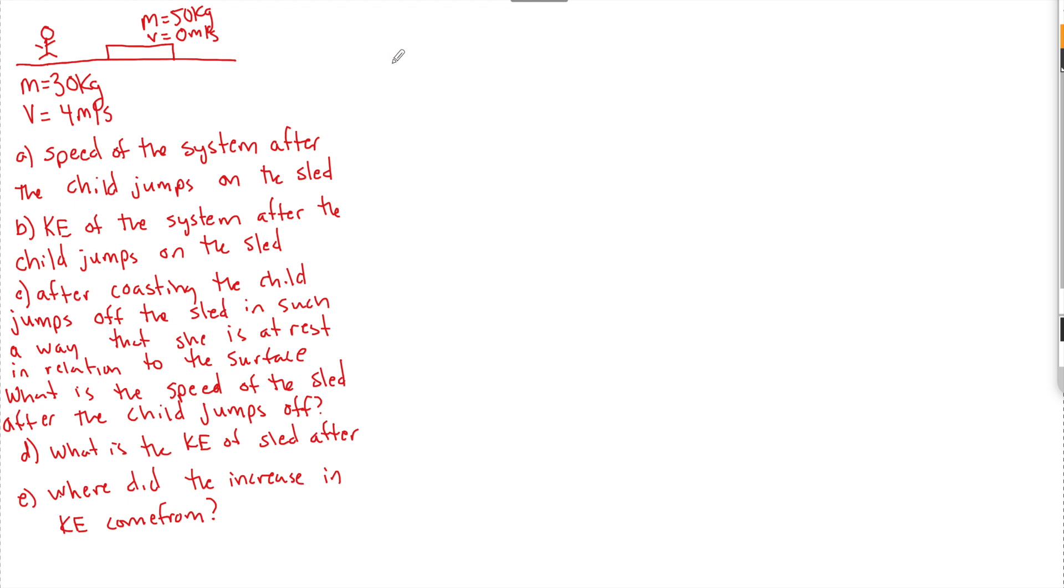Hey students, what's up? Another review question for the midterm. In this example, we have a 30 kilogram child that is running towards a sled at 4 meters per second. This 50 kilogram sled is at rest. The child is going to jump onto the sled, causing her and the sled to travel in this direction. The question asks, what's the speed of the system after the child jumps on the sled? What is the kinetic energy of the system just after the child jumps on the sled?